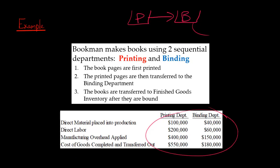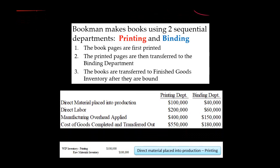Here are the figures we're going to use. Starting with the printing department — we are requisitioning some raw materials into production, $100,000 worth. We're going to credit raw materials inventory and debit work in process inventory. Because we have sequential departments, we're going to debit work in process inventory specific to printing. There's going to be a WIP account for printing and a WIP account for the binding department — each with their own separate work in process inventory accounts.